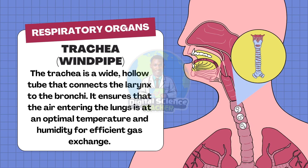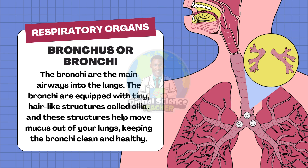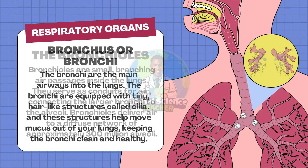The trachea, or windpipe, is a wide hollow tube that connects the larynx to the bronchi. It serves to ensure that the air entering the lungs is at an optimal temperature and humidity for efficient gas exchange. The bronchi are the main airways into the lungs, so air gets into the lungs through the bronchi. The bronchi are equipped with tiny hair-like structures called cilia, and these structures help to move mucus out of the lungs, keeping the bronchi clean and healthy.